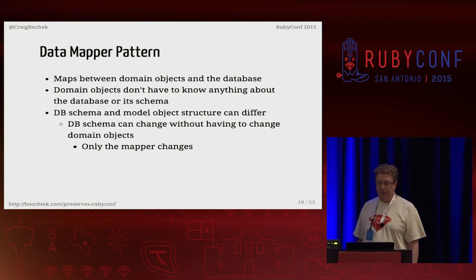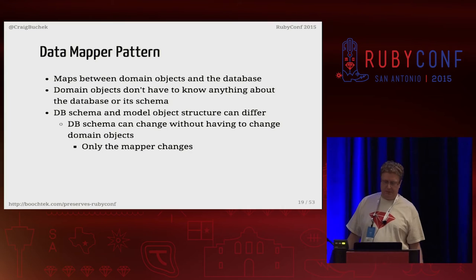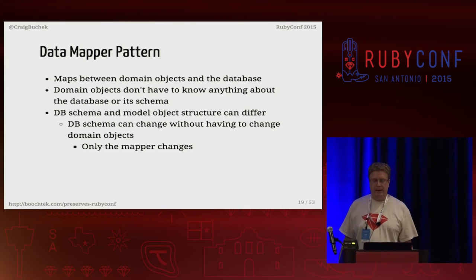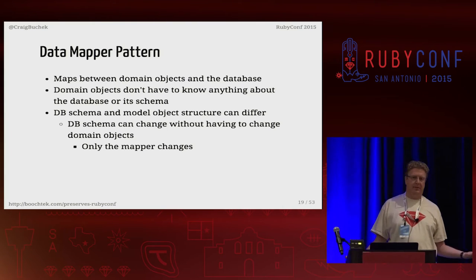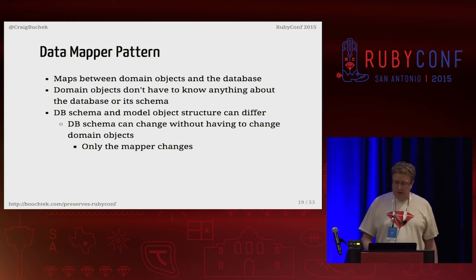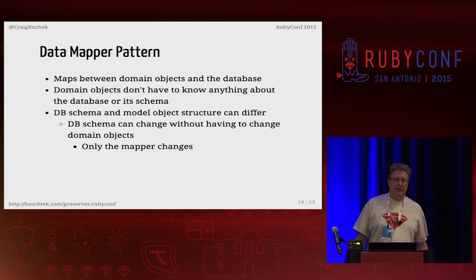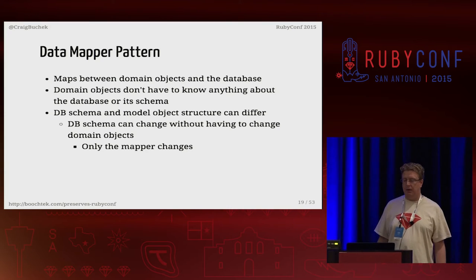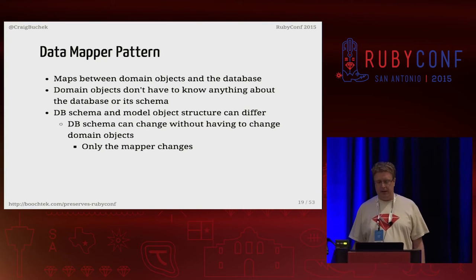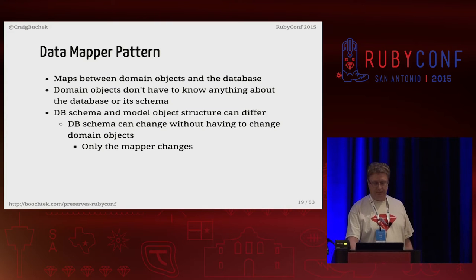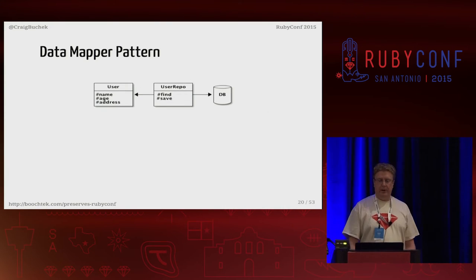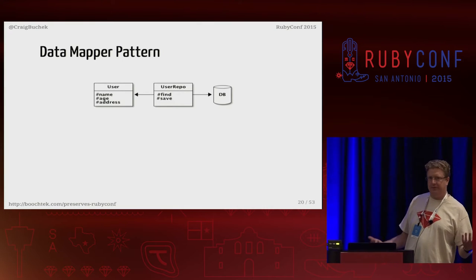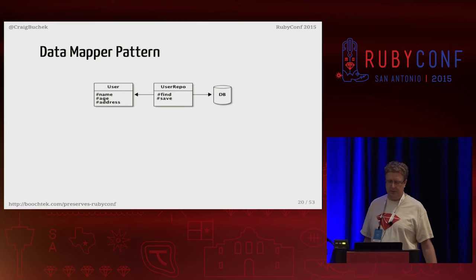You might see domain model objects called entities in the data mapper pattern — an entity just means it's an object defined by its ID. Python has an ORM called SQLAlchemy that uses the data mapper pattern. It's very highly regarded and is basically the Python ORM.